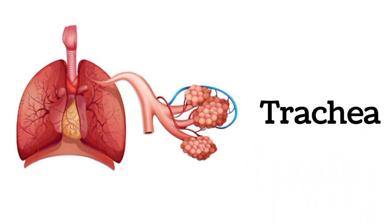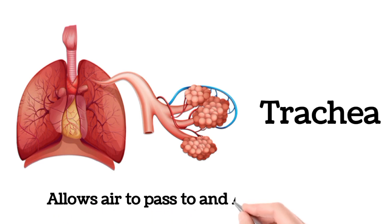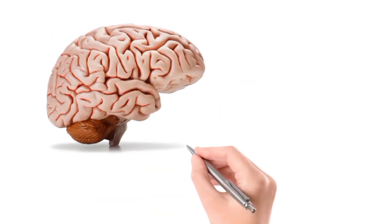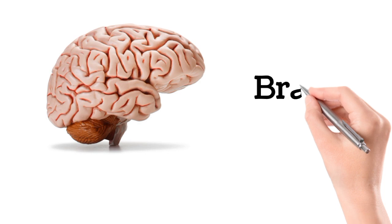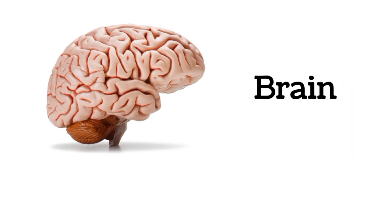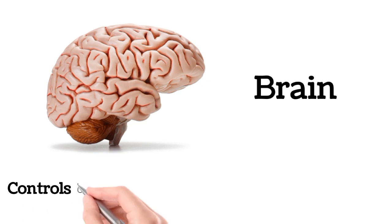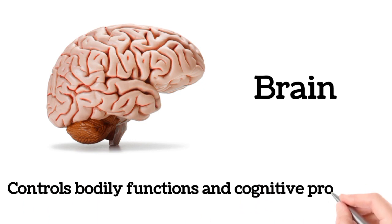Trachea. The trachea allows air to pass to and from the lungs. Brain. The brain controls bodily functions and cognitive processes.